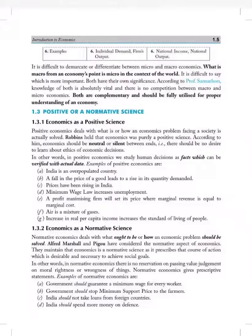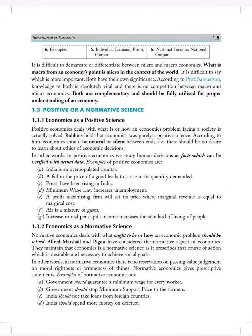There is one more difference. Examples. In microeconomics, individual demand, firm's output. And in macroeconomics, as we discussed the whole, national income and national output.